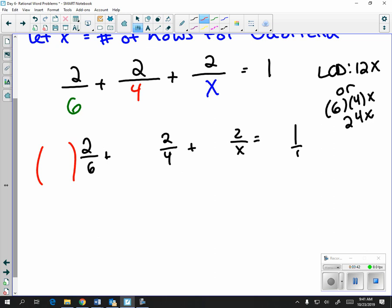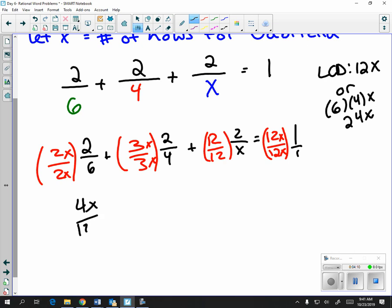Over 1 if you want to write it as a fraction. The first one, to get to an LCD of 12, you multiply 6 by 2. To get to an LCD of 12, you multiply 4 by 3. And these should also have x's because you're missing the x as well. x is missing the entire 12, and 1 is missing everything.